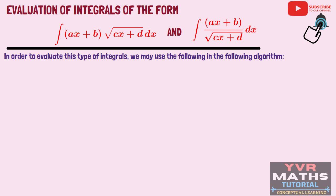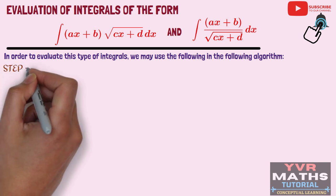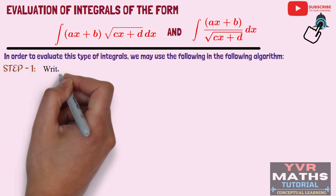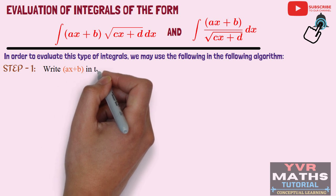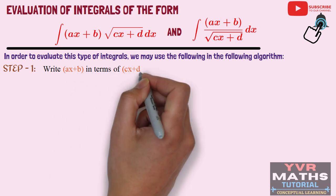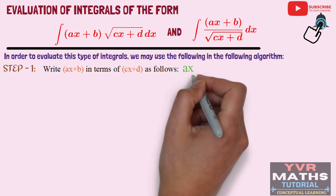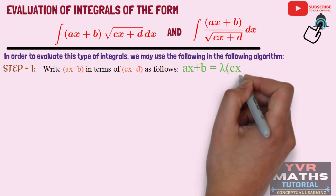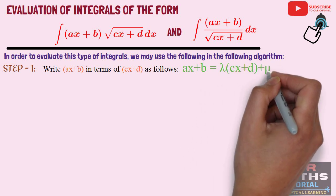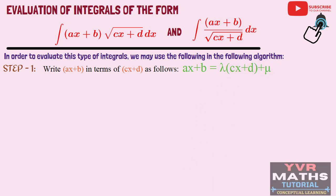In that algorithm, I will explain Step 1. From the given integral, write AX + B in terms of CX + D. We use the relation: AX + B = λ(CX + D) + μ, where λ and μ are real numbers. We need to find the values of λ and μ. This is the first step.